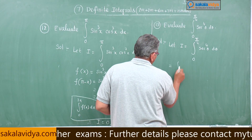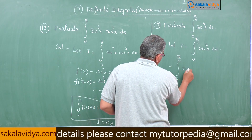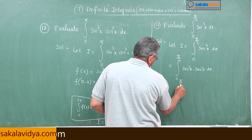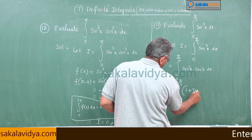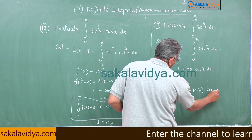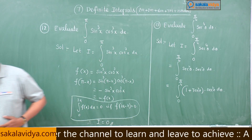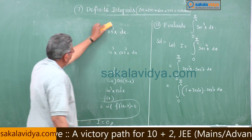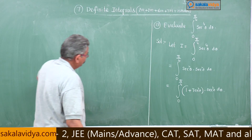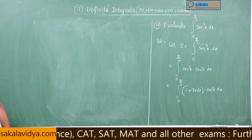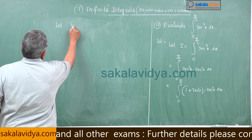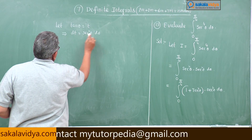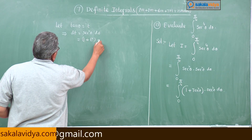Let I equal the integral from 0 to π/4 of sec⁴(θ) dθ. Rewrite as the integral from 0 to π/4 of (1 + tan²θ)·sec²(θ) dθ. Now let tan θ = t, so dt = sec²θ dθ. The integrand becomes (1 + t²) dt.